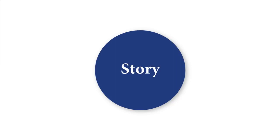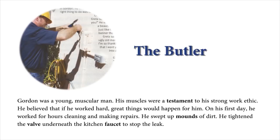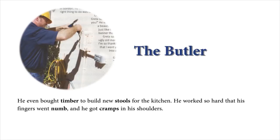The Butler. Greta was an elderly lady who lived alone in a huge, dilapidated mansion. The mansion was in terrible condition — it was covered with filth, and most of the furniture was broken. Plus, the kitchen sink leaked water all over the floor. Greta was too old to do housekeeping and repairs herself, so she hired a butler named Gordon. Gordon was a young, muscular man. His muscles were a testament to his strong work ethic. He believed that if he worked hard, great things would happen for him. On his first day, he worked for hours cleaning and making repairs. He swept up mounds of dirt. He tightened the valve underneath the kitchen faucet to stop the leak. He even bought timber to build new stools for the kitchen. He worked so hard that his fingers went numb, and he got cramps in his shoulders.